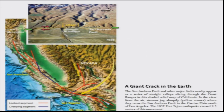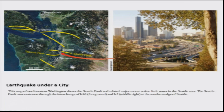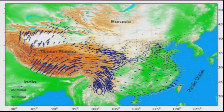A giant crack in the Earth passing through cities is exemplified by Seattle, where residents understand that a fault passes through their city. Coming to the Indian subcontinent, some information is available about the deformation and motion of the Indian plate. We will continue this in the next lecture.